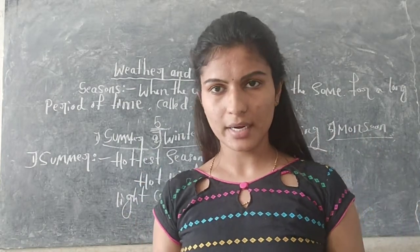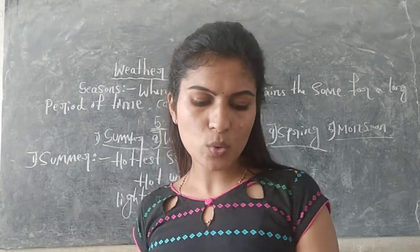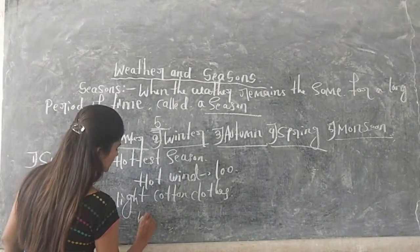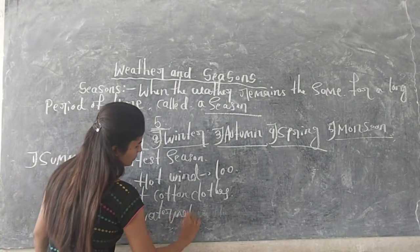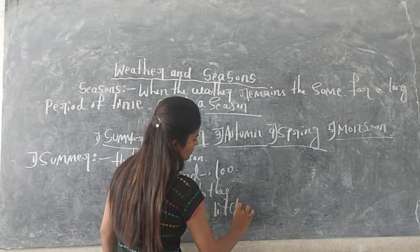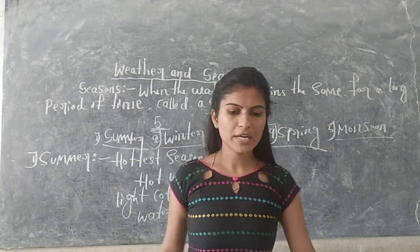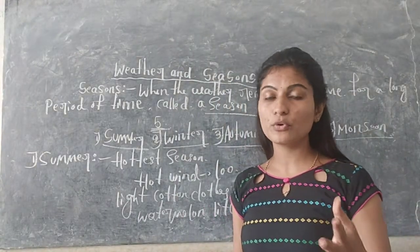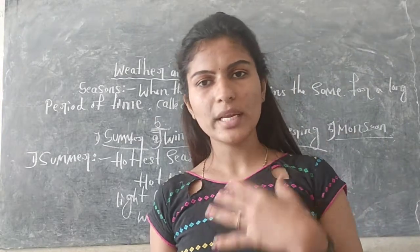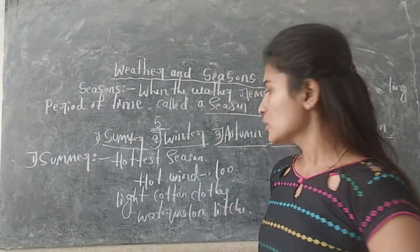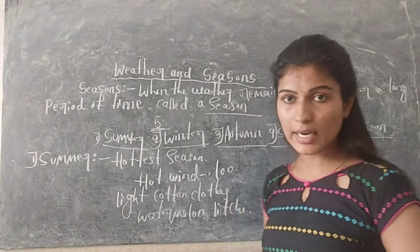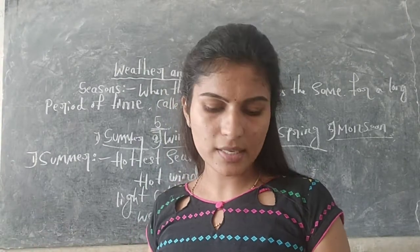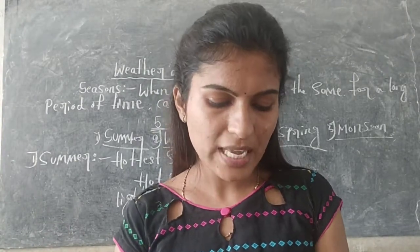Drinking a lot of water is very good for your health — it keeps your body hydrated. We also eat fruits like melon and watermelon in the summer season. These are juicy fruits that help hydrate the body.